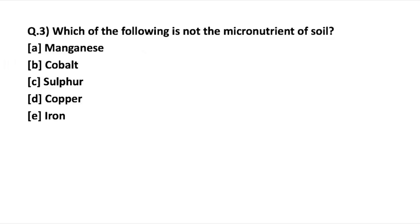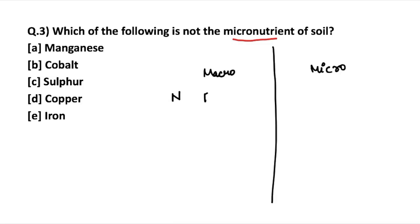Next is a very important question from the previous year paper regarding micronutrients: which of the following is NOT a micronutrient of the soil? Fertilizers are used to supply plant nutrients. There are two major categories: macro and micronutrients. The primary macronutrients are nitrogen, phosphorus, and potassium — more popularly known as NPK. Nitrogen helps in leaf growth.